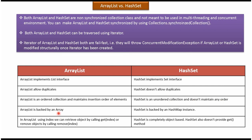ArrayList is backed by an Array, whereas HashSet is backed by a HashMap instance. In ArrayList, using index position, we can retrieve or remove an object. ArrayList supports two methods, get and remove, which accept index position. HashSet is completely object-based and does not support get or remove methods which accept index position.